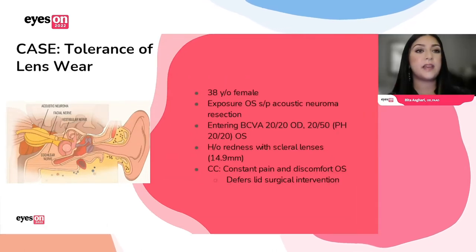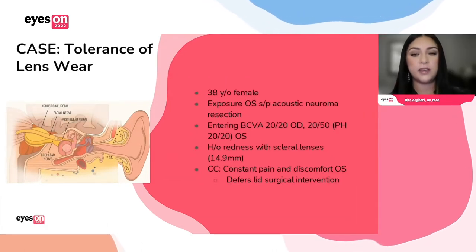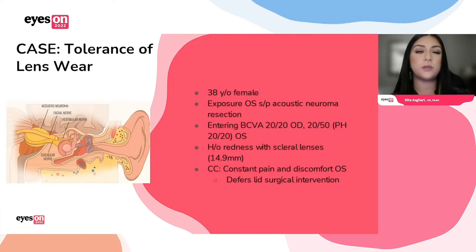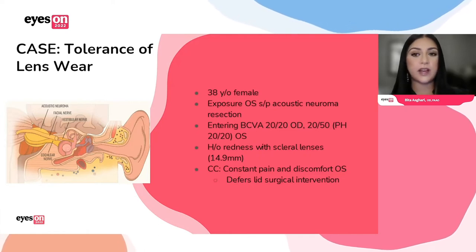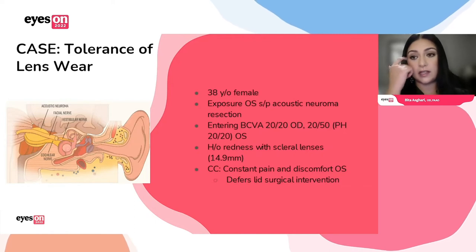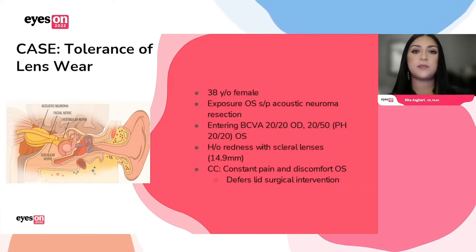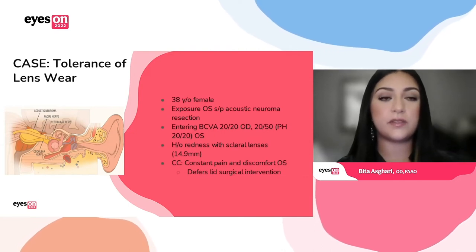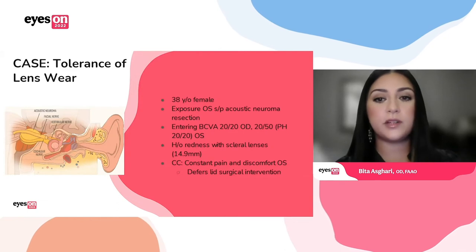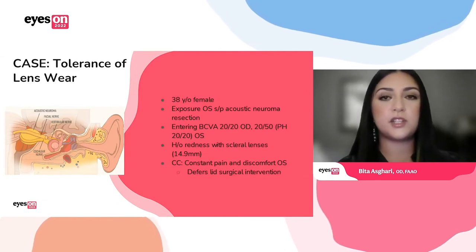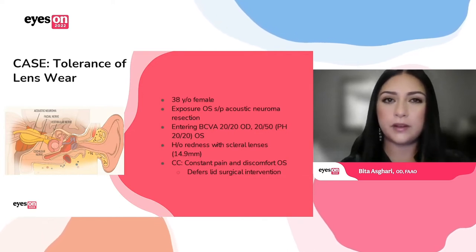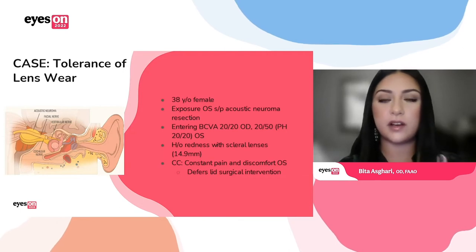This is a case of a patient who had poor tolerance with lens wear — a 38-year-old Caucasian female with a history of exposure in the left eye following an acoustic neuroma resection. Her vision was normal in the right, as expected, and there was some vision deficit in the left eye at 20/50. She had tried scleral lenses before but could not really tolerate them because her eye would get really red. She was in quite a bit of discomfort and pain because of this degree of exposure.